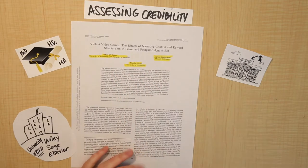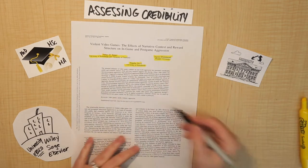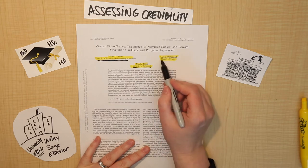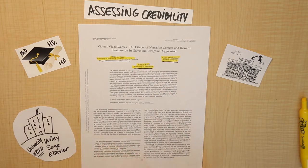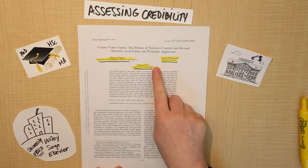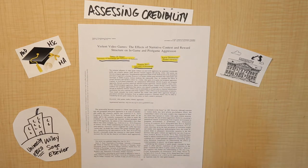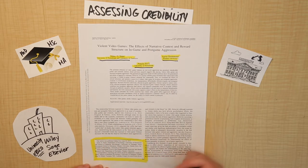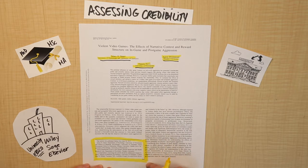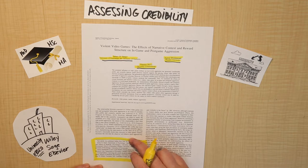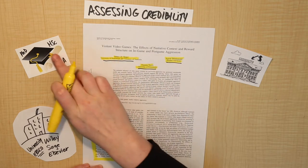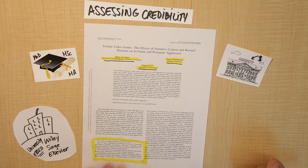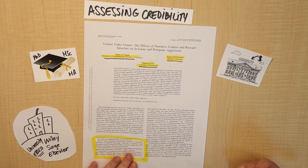Underneath each of these people's names, we have a university listed. This one says University of Portsmouth and University of Tasmania, this one says University of Portsmouth, and this one says Flinders University — these are all universities in Australia. If you look down in this section, you can see it talks more about where each of these authors works, which shows that they probably have one of these degrees and are employed there as teachers, researchers, or both.